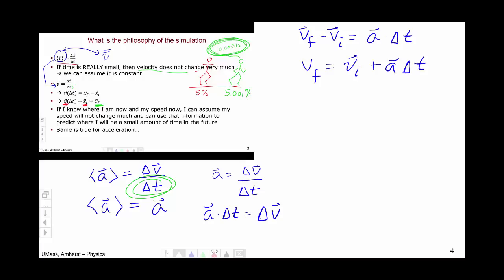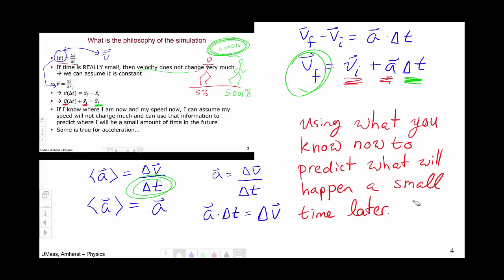So again, if I know my speed at some instant, my acceleration at some instant, and my delta T is small enough, then I can use that information to predict what my delta V is going to be some small time later. So it's the same idea. We'll be doing this throughout the course with a wide variety of concepts from forces to temperature to entropy. In all cases, you're using what you know now to predict what will happen a small time later.